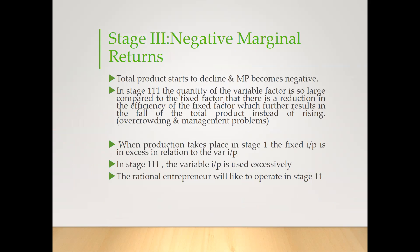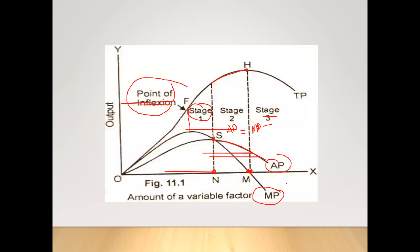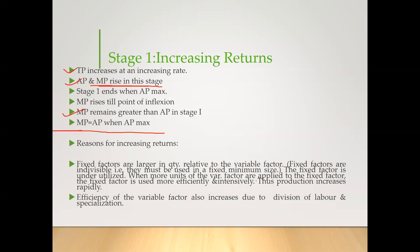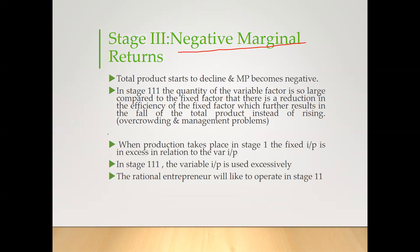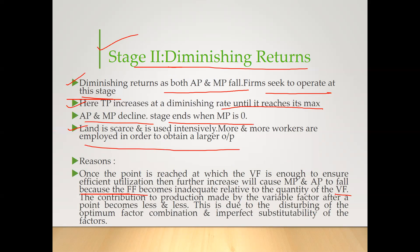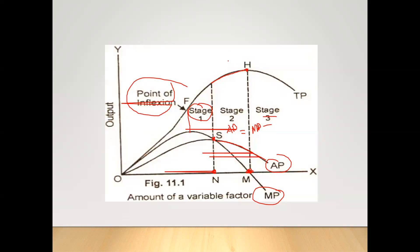The last stage, stage 3, is called negative marginal returns. In stage 3, the MP curve goes negative — all values are below the x-axis. Total product starts to decline and MP becomes negative. After the maximum point of TP, TP is declining and MP is negative.